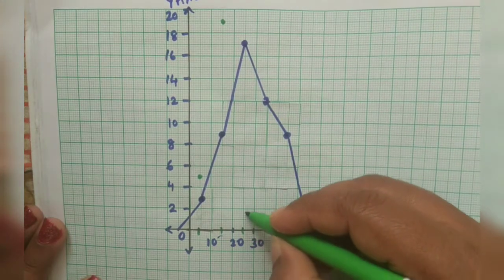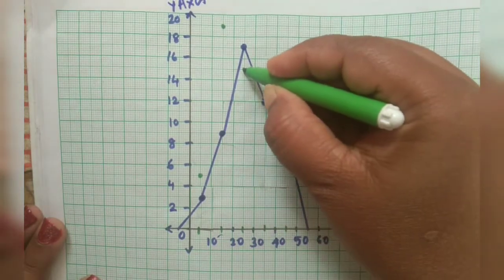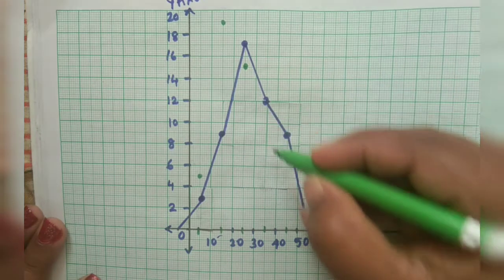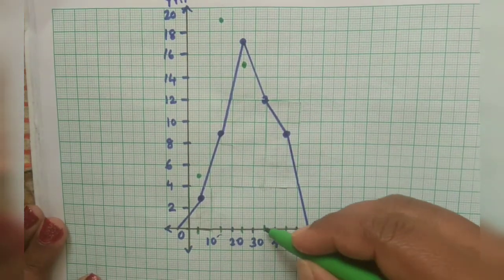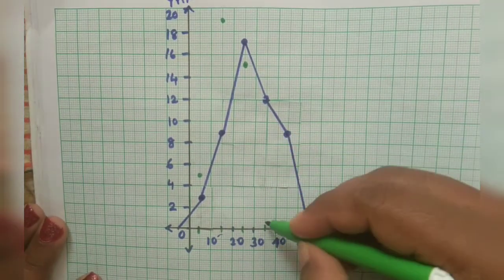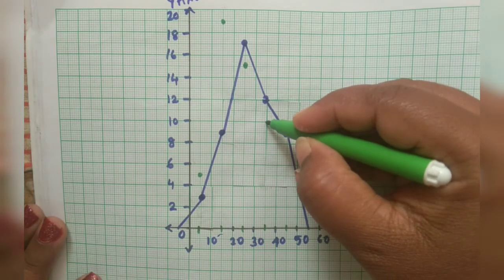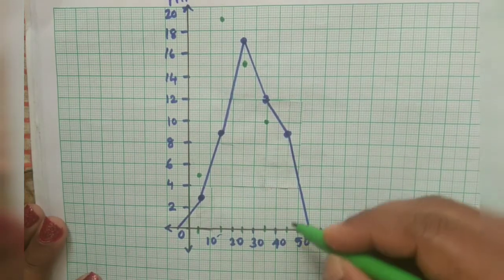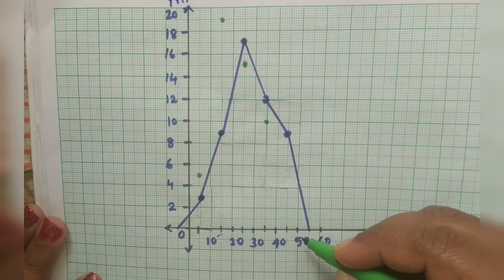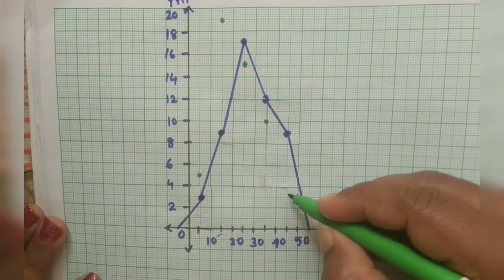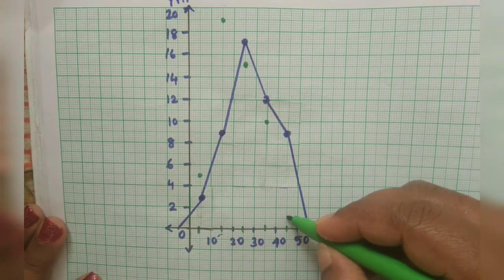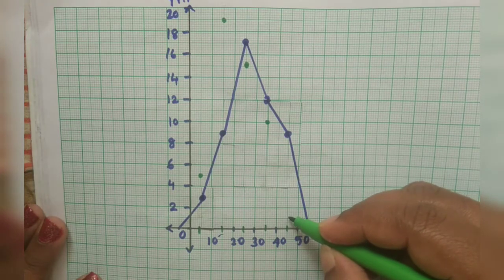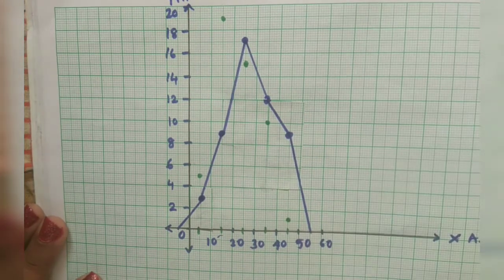Then next for 25 it is 15. Then next for 35 it is 10. Then for 45 it is 1.